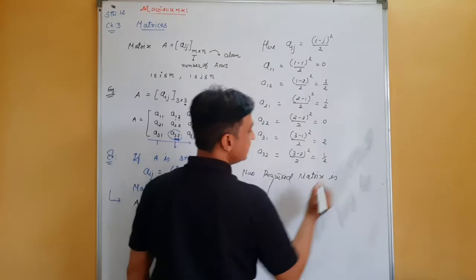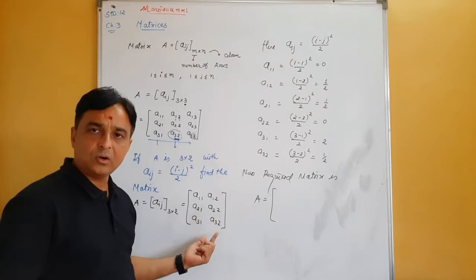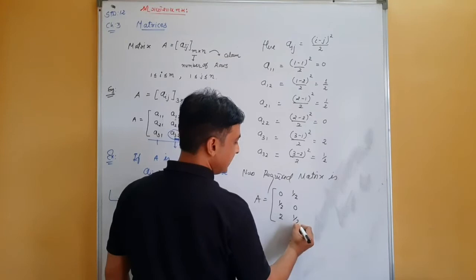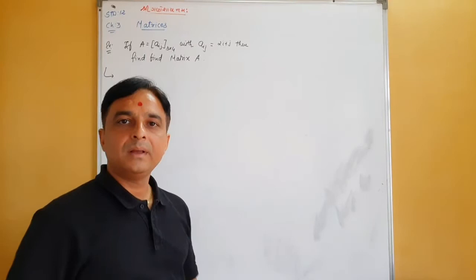So the required matrix A is: [0, 1/2; 1/2, 0; 2, 1/2]. That is the solution for this example.